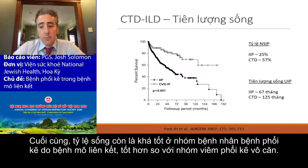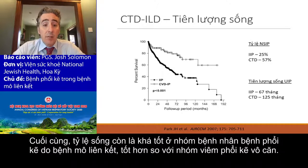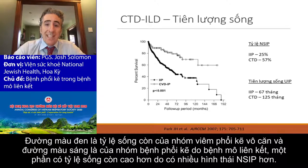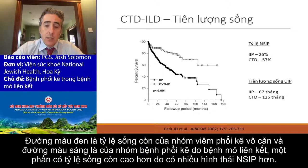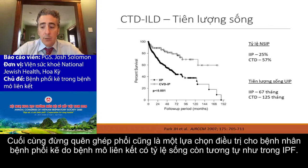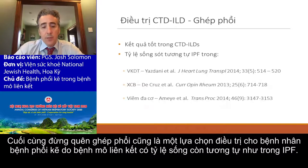Survival is pretty good in patients with connective tissue related ILD — it is better than patients who have idiopathic interstitial pneumonia. The dark line with the poor survival is patients with idiopathic interstitial pneumonia, and the clear circles are patients with connective tissue related ILD. They just have a better survival, partially because they have more NSIP, which is a better disease to survive. Don't forget lung transplant — patients with connective tissue related ILD have a good survival with lung transplant, about the same as patients with IPF.